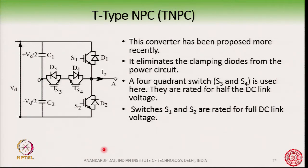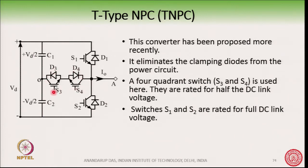What are the voltage ratings of these switches? The upper switch is rated for the full DC bus voltage and the same applies to the lower switch, because if the upper switch is off and the lower switch is on, the whole voltage will appear across it — so these switches must block the full DC bus. The voltage rating of the inner switches is half the DC link voltage. These inner switches are 4-quadrant switches, meaning they must block both positive and negative voltage, and the current through them should be bidirectional.